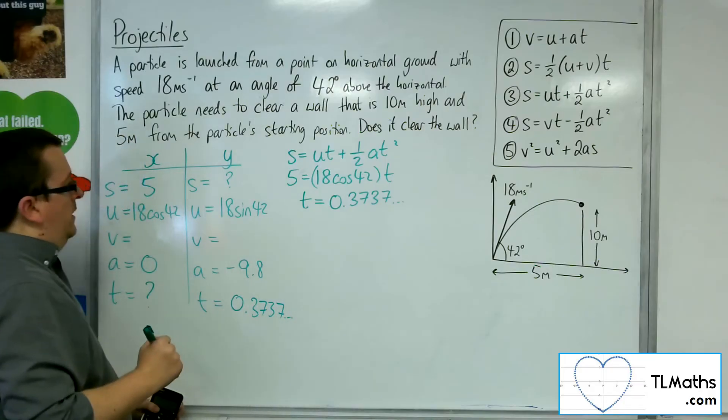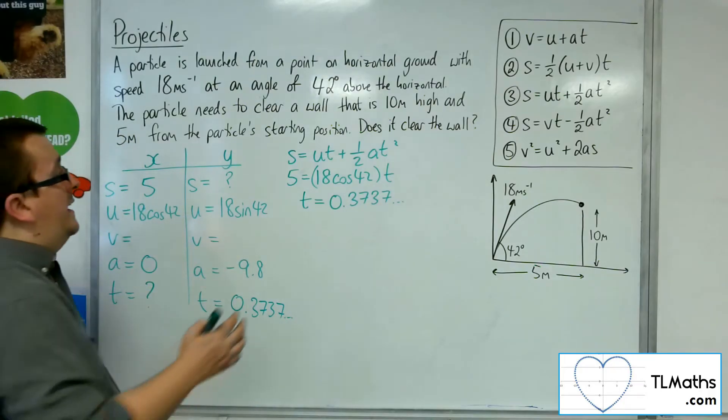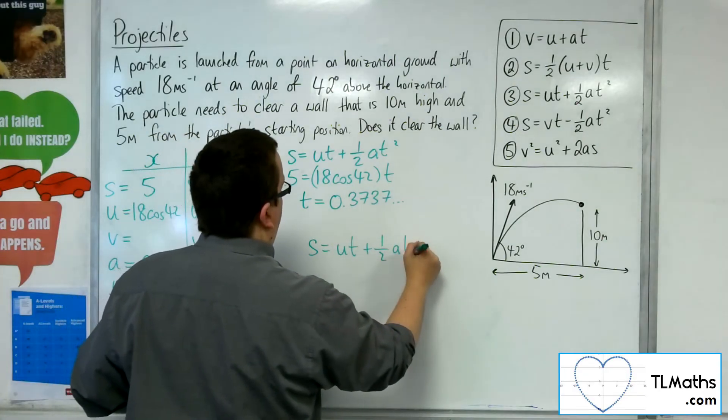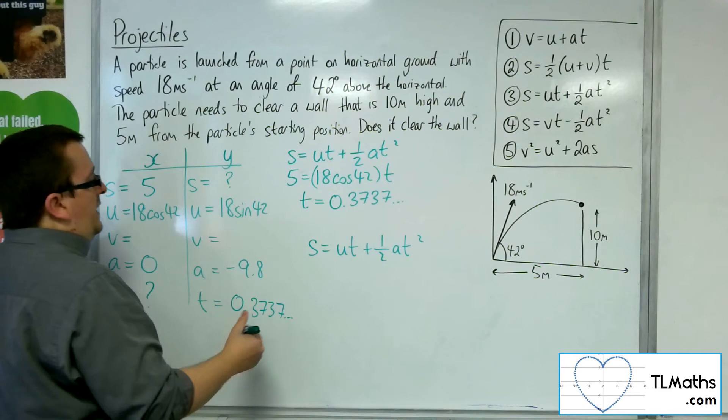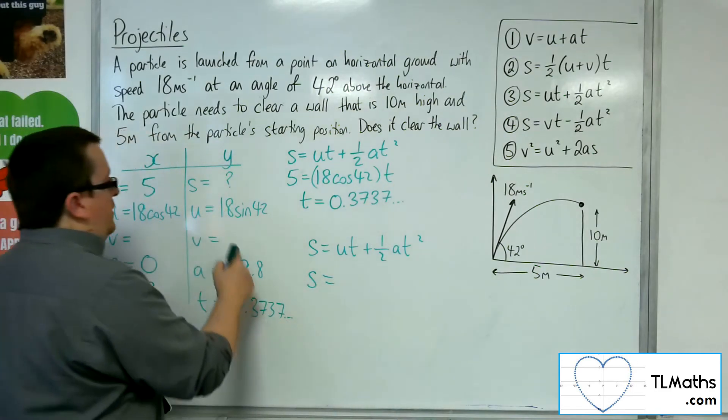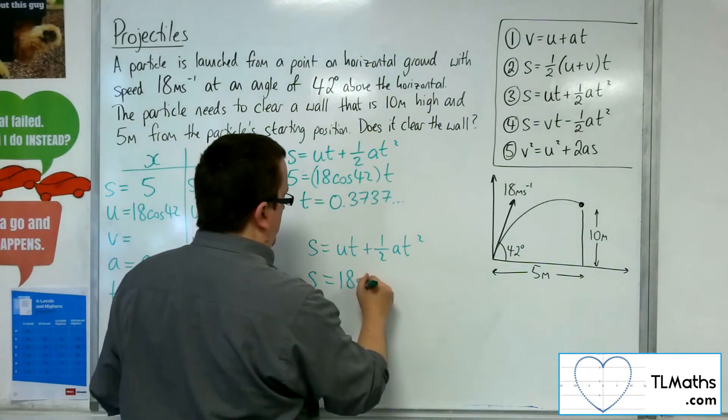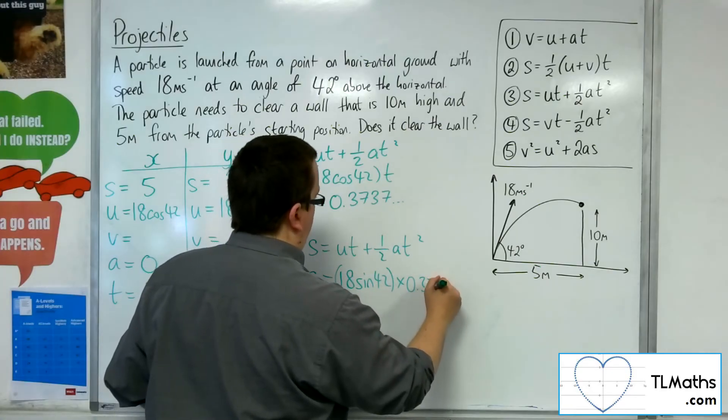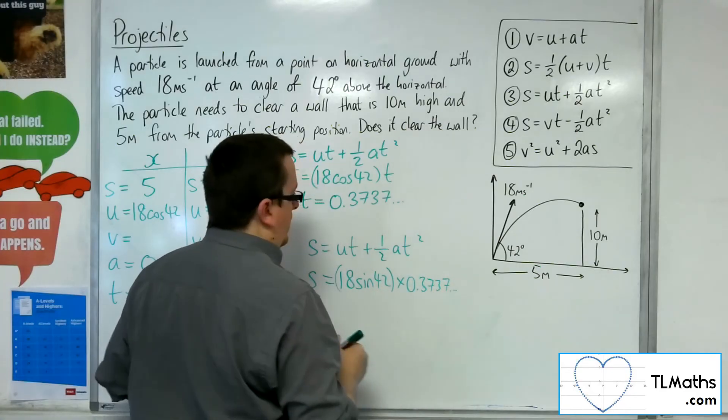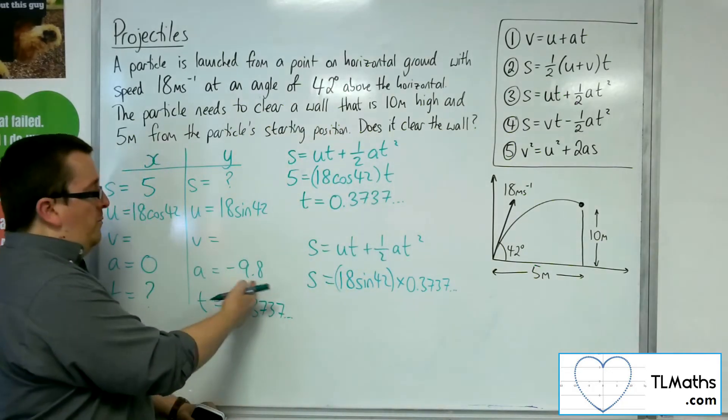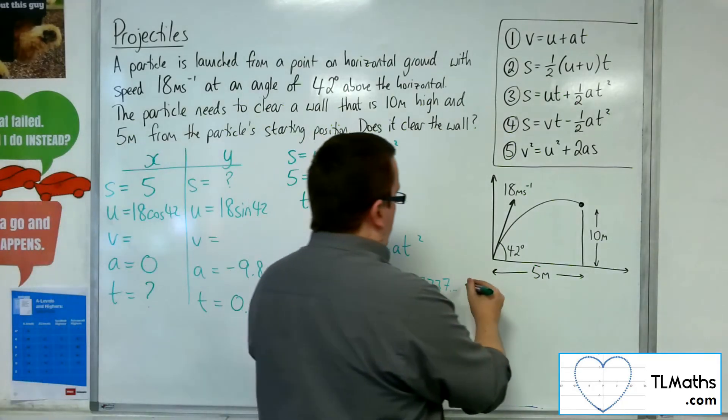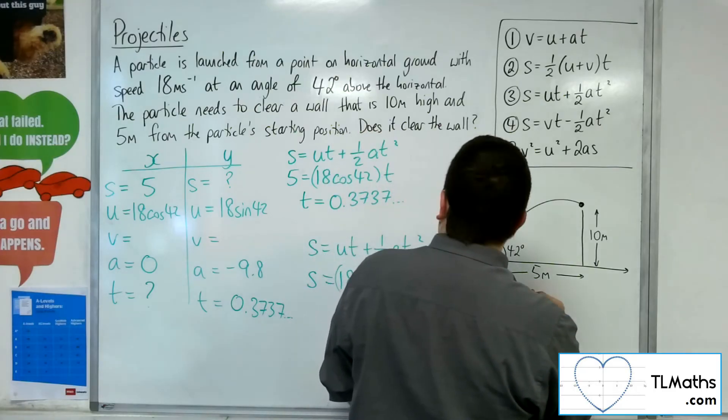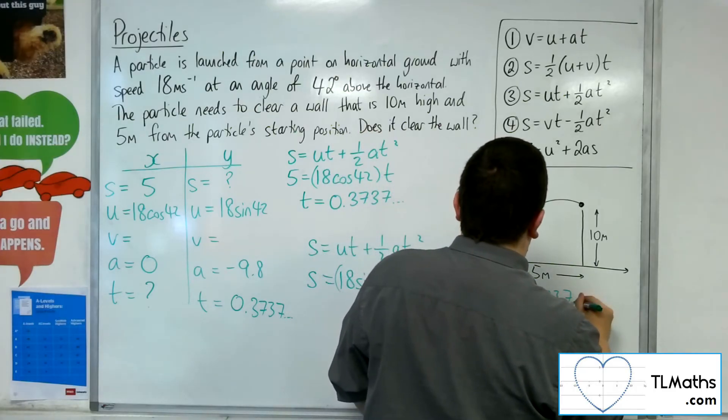So I want to find the vertical component for the displacement at the time 0.3737. I want the equation that doesn't have V in it again, which is the same one. So S is equal to UT plus 1 half AT squared. The S is what I want to find. The U is 18 sin 42. The T is 0.3737. The A is minus 9.8, so half of that is minus 4.9, times 0.3737 squared.